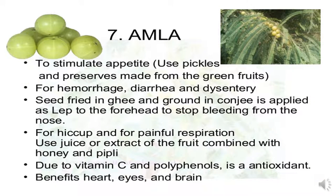Next one is amla. Its benefits include: to stimulate appetite, use pickles and preserves made from the green fruits. For hemorrhage, diarrhea and dysentery, a seed fried in ghee and ground in congee is applied to the forehead to stop bleeding from the nose. For hiccup or painful respiration, use juice or extract of the fruit combined with honey. Due to its vitamin C and polyphenols, amla has antioxidant benefits for the heart, eyes and brain.